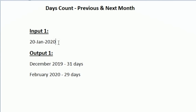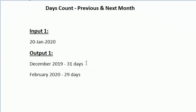The previous month to January is December of the previous year. So in the first line of our output we print the previous year's December month - the year is 2019, and December always has 31 days. The next month will be February, and in 2020 February has 29 days. So whenever the input month is January, we move to the previous year's December month.